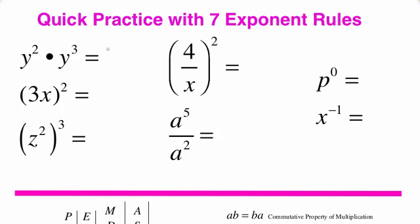y squared times y cubed would be y to the fifth, because two plus three is five. That's called the product rule. Next we have three x quantity squared. This is called product to a power. We square three and we square x. This will be nine x squared.